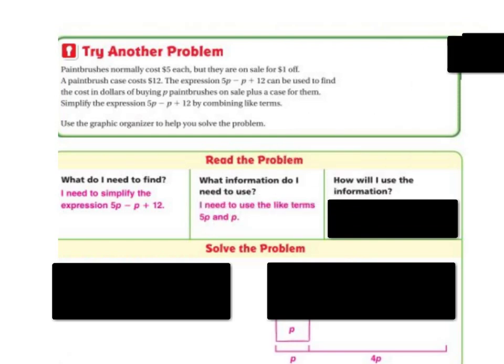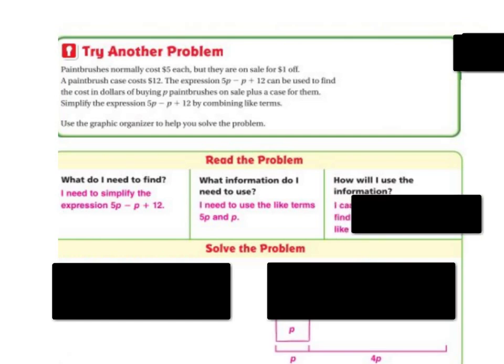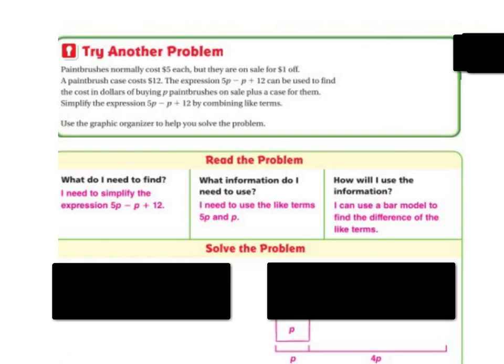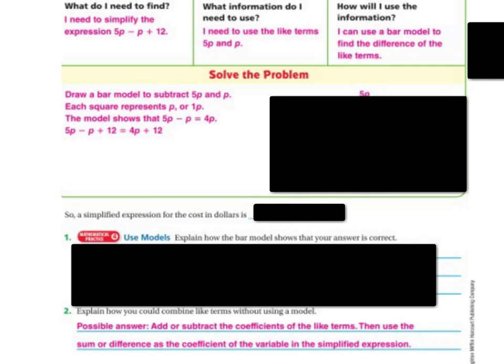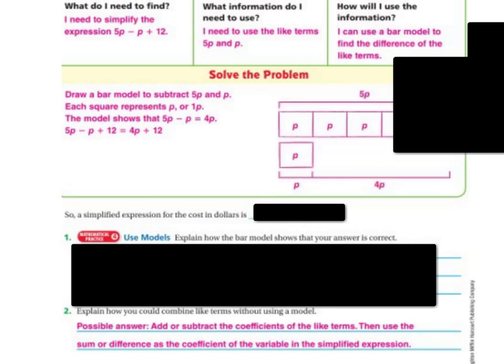What information do I need to use? Well, I need to use the like terms 5P and P. How will I use the information? Well, I can use a bar model to find the difference of the like terms. So if you draw a bar model to subtract the 5P and the P, then each square is going to represent P or 1P.